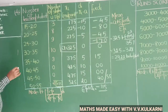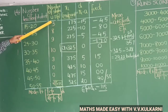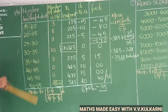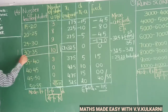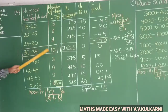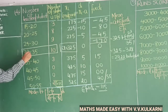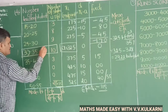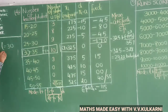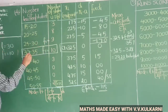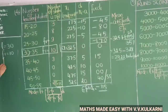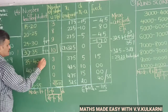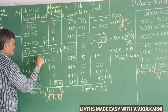Next, find the mode. Look for the highest frequency in the table: the frequencies are 2, 8, 30, 10, 40, 0, 0, 2. The highest frequency is 10, corresponding to the class 30-35. So the modal class is 30-35. The lower limit of the modal class (l) is 30, frequency of modal class (f1) is 10, frequency of the preceding class (f0) is 9, and frequency of the succeeding class (f2) is 3.